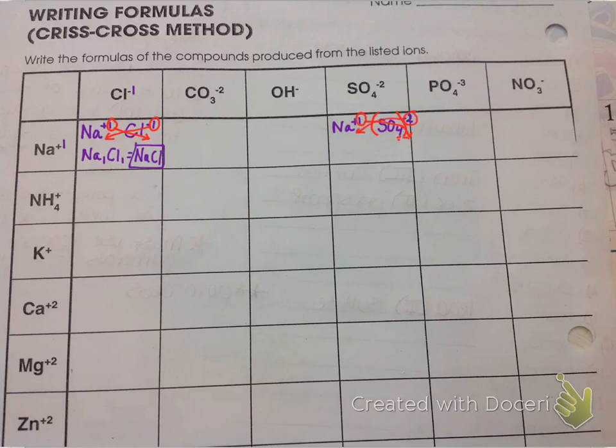And so now our final formula is going to be Na2. The 2 comes from the criss-cross. Parentheses, SO4, and then you could put the 1, but you don't have to. Again, because the 1 typically is not written in the formula.